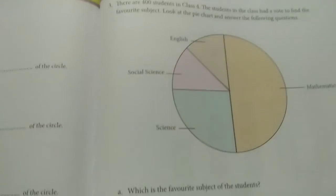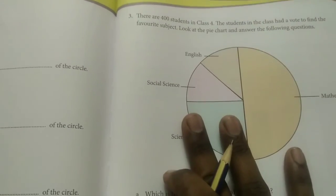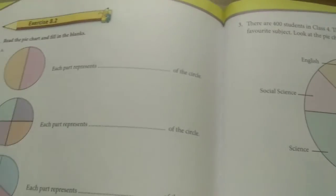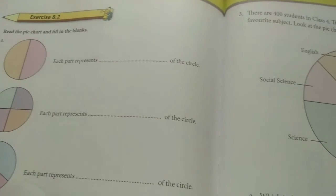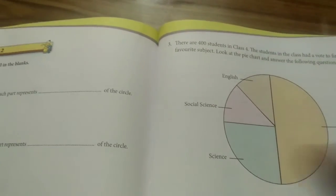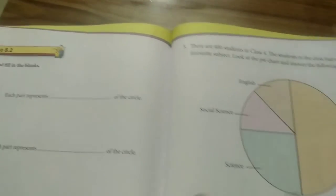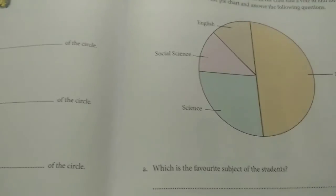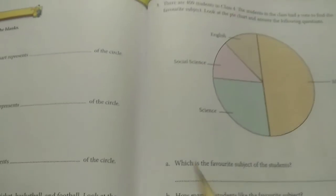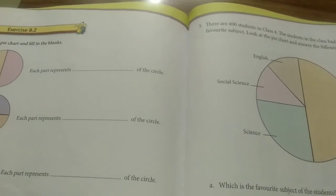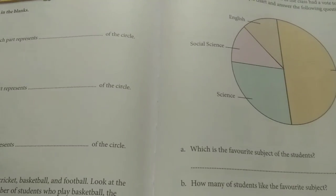Exercise 8.2, page number 112, Question 3 is a homework for you. It's very simple — observe the pie chart and answer the question. Today's video has two homeworks, one from each exercise. Please do both, take a snapshot, and send it to me. If you have any doubts, don't forget to call or text me. Thank you, take care, bye bye!